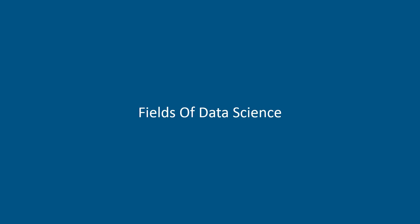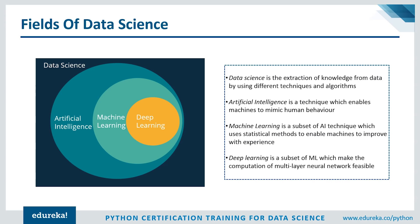Before we start comparing machine learning and data science, let's understand the different fields covered under data science. Data science covers a wide spectrum of domains including artificial intelligence, machine learning, and deep learning. It uses various AI, machine learning, and deep learning methodologies in order to analyze data and extract useful insights from it. Artificial intelligence is basically a subset of data science which lets machines simulate human-like behavior.